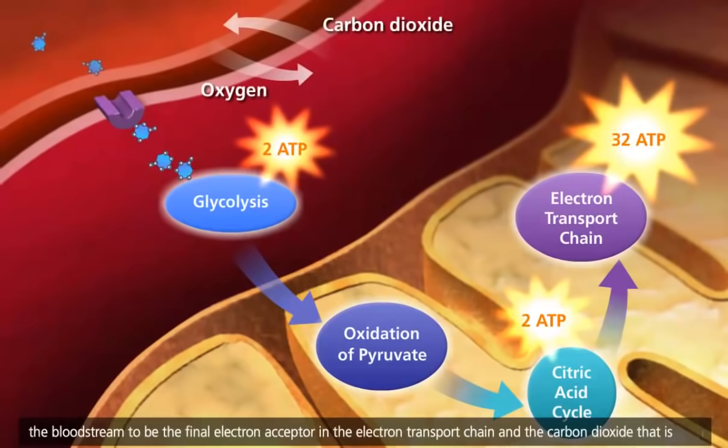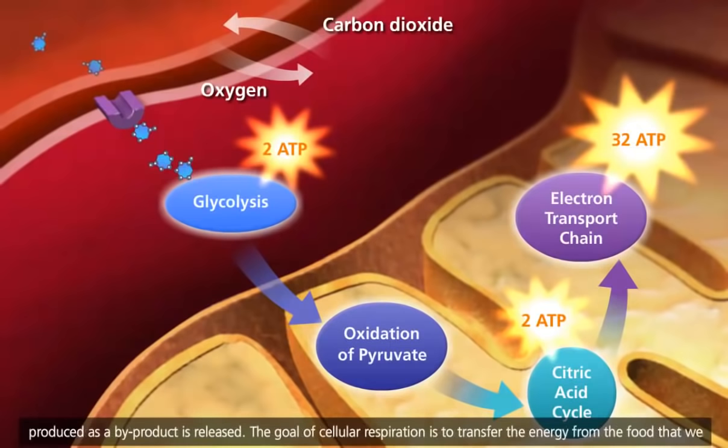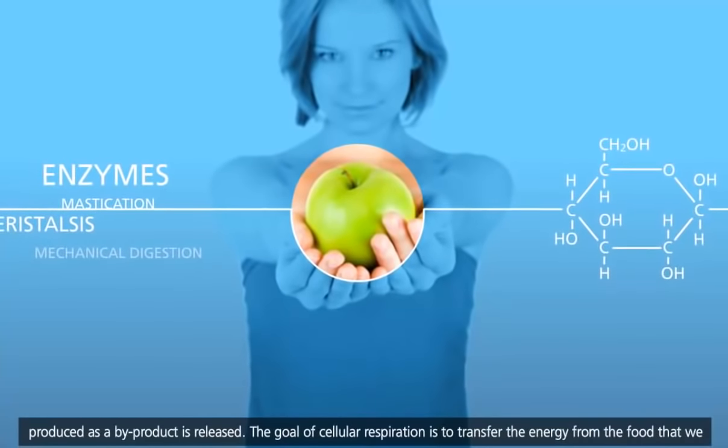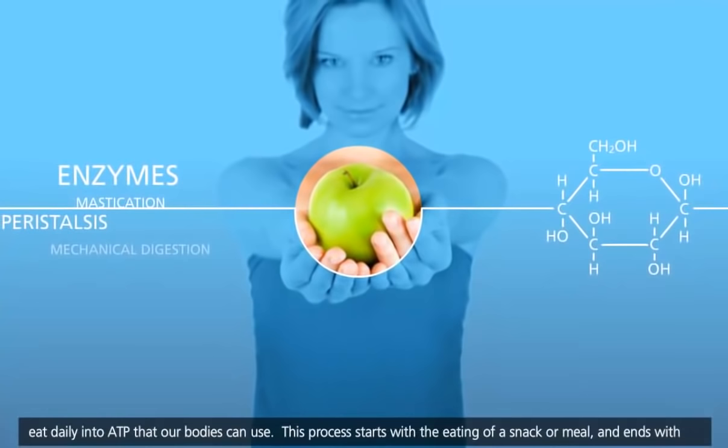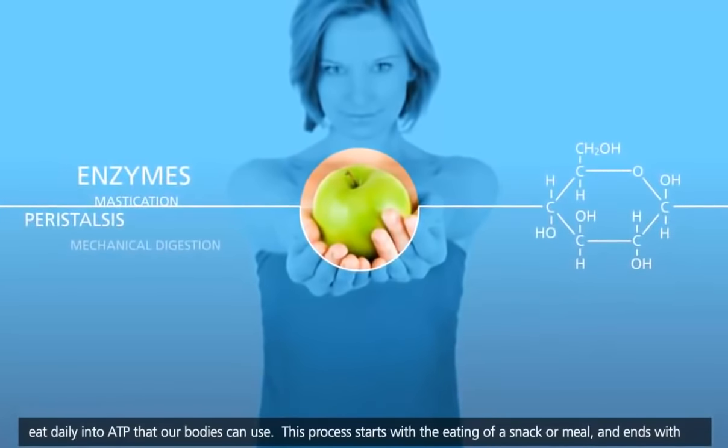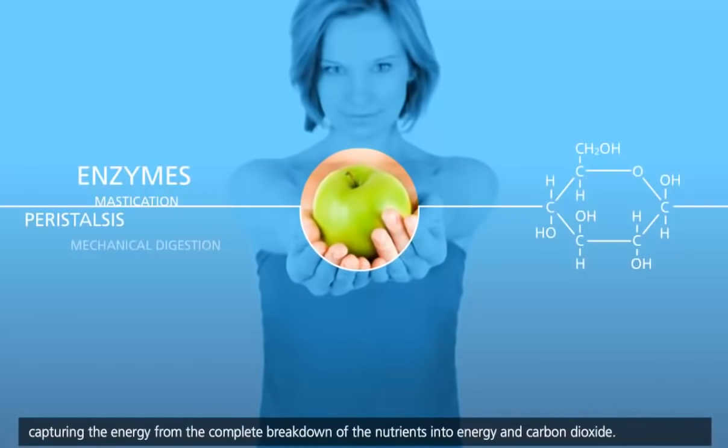The carbon dioxide that is produced as a byproduct is released. The goal of cellular respiration is to transfer the energy from the food that we eat daily into ATP that our bodies can use. This process starts with the eating of a snack or meal and ends with capturing the energy from the complete breakdown of the nutrients into energy and carbon dioxide.